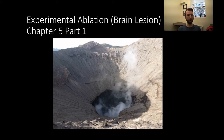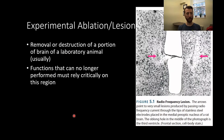For Part 1, we're going to be discussing experimental ablation, or brain lesions — the destruction of portions of brain tissue — and then subsequent testing to infer what that region was doing. An experimental ablation, or lesion, is the removal or destruction of a portion of the brain of a laboratory animal. Intentional lesions in humans are rare. Functions that can no longer be performed must rely critically on that region — that's the rationale we're working with.